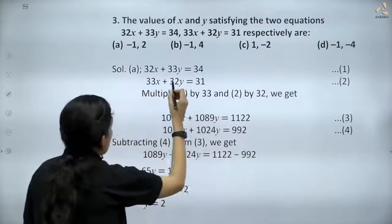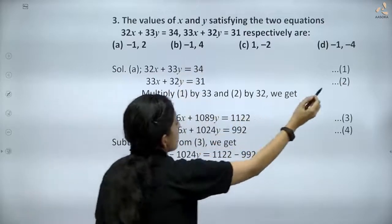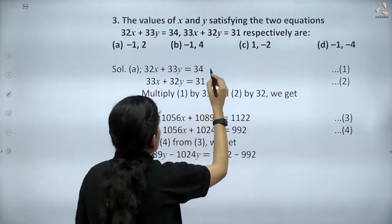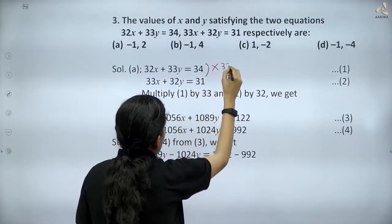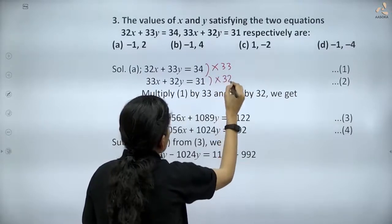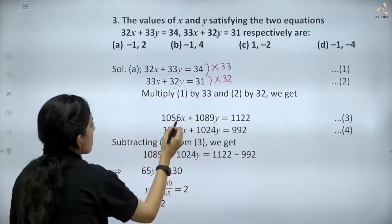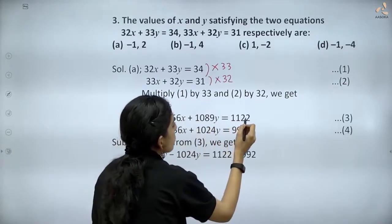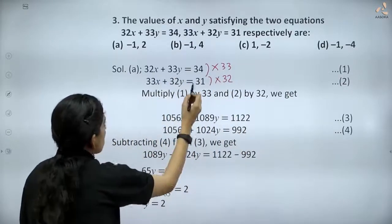Multiply equation (1) by 33 and equation (2) by 32. We get 1056x + 1089y = 1122. This first equation becomes equation (3).